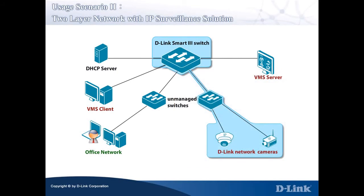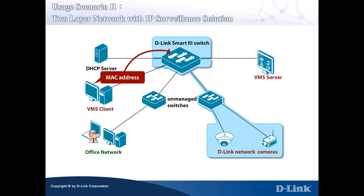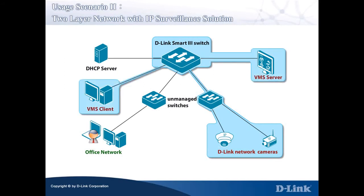If you want to view VMS server live video or do remote playback, follow the same steps to add the MAC address of the VMS client to the Smart 3 switch Auto Surveillance VLAN settings. After you finish the configuration, both the VMS server and the client will be recognized by the Smart 3 switch and placed in the Auto Surveillance VLAN. Let's verify the configuration.